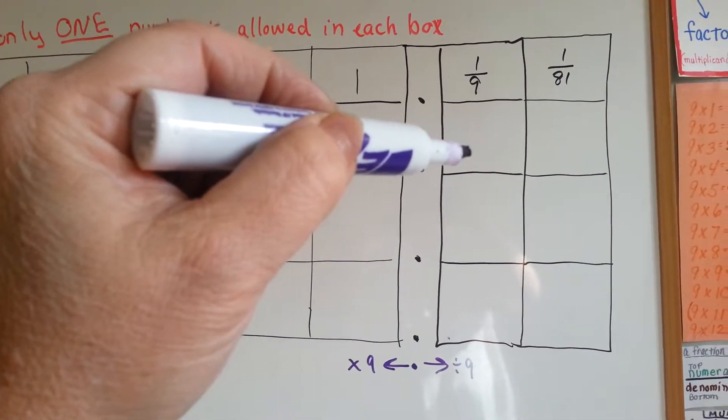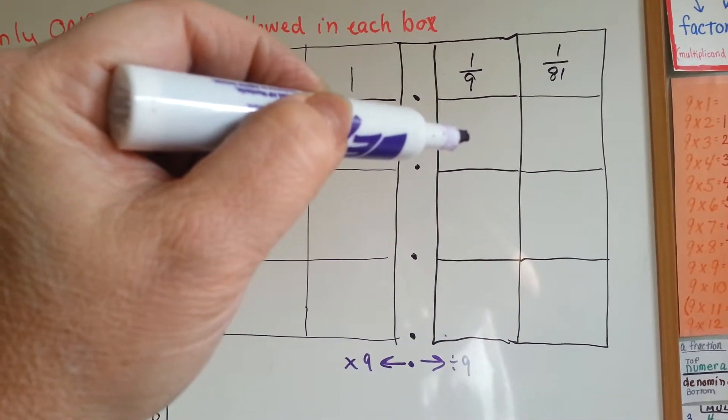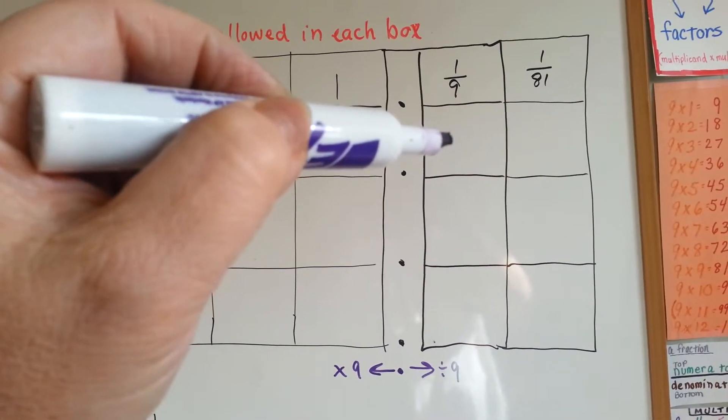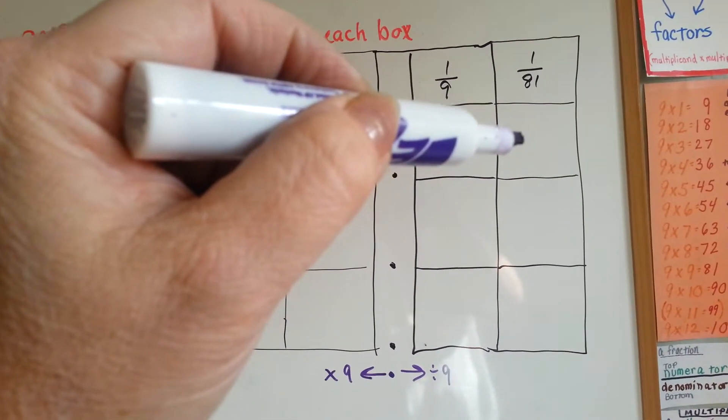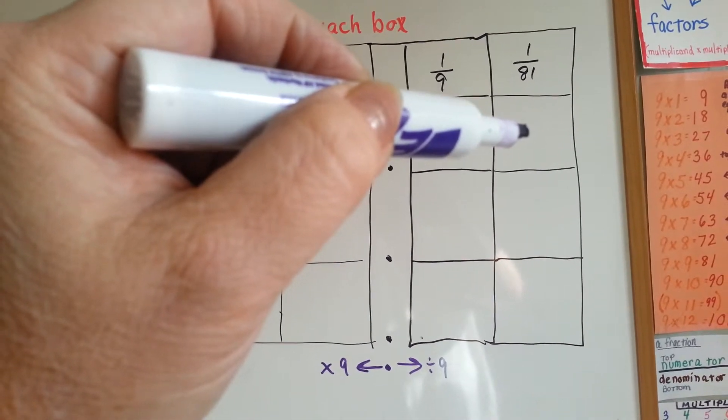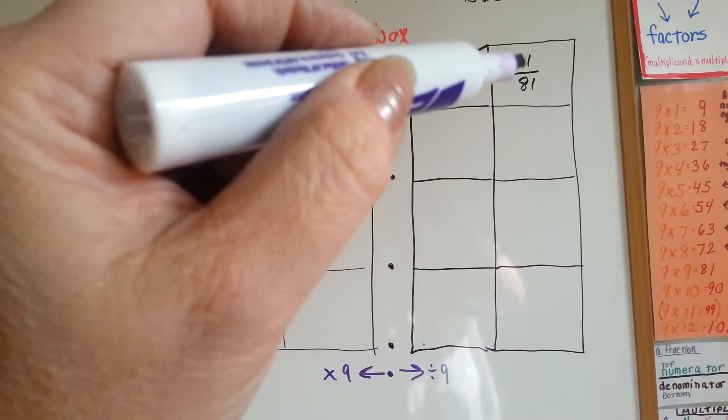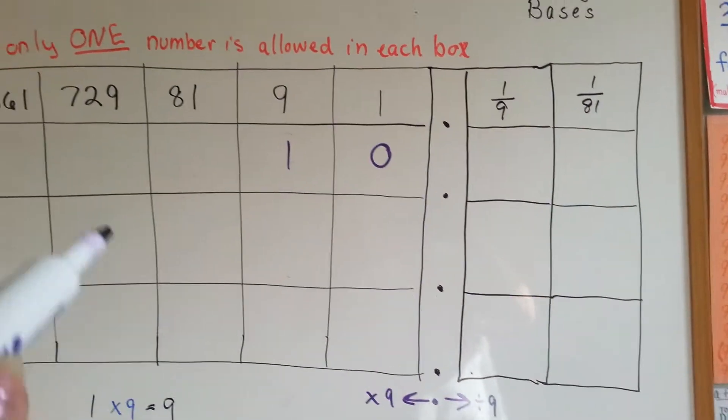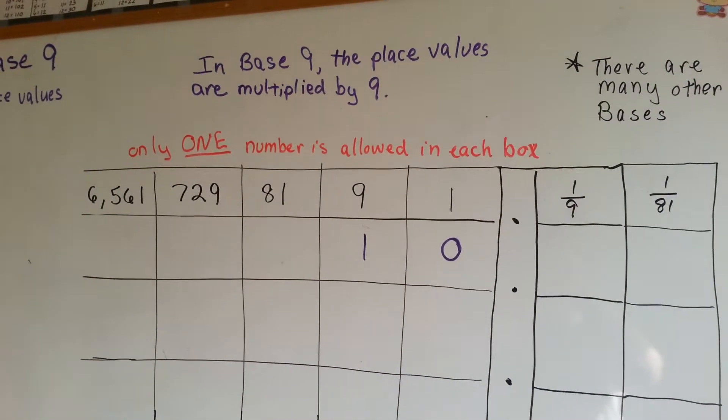So this side of the decimal point would be 1 ninth. Instead of 1 tenth, that would be base 10. It's 1 ninth. And instead of 1 hundredth in this place value, as in base 10, in base 9 it would be 1 eighty-first. Very different than the one we use now.